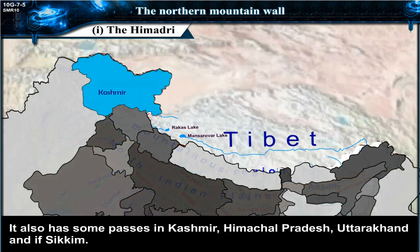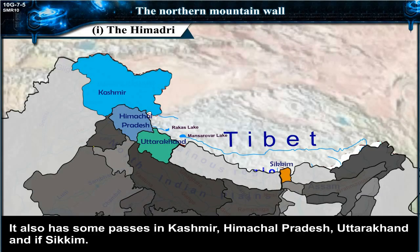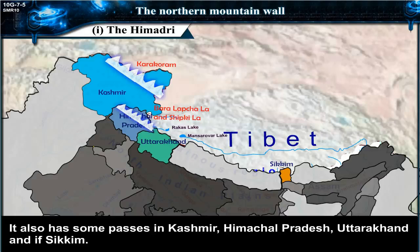It also has some passes in Kashmir, Himachal Pradesh, Uttarakhand, and Sikkim. These include the Karakoram Pass in Kashmir, Baralacha La and Shipkila in Himachal Pradesh, and Thaga La and Neeti in Uttarakhand.